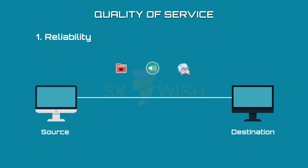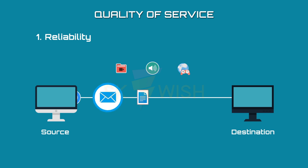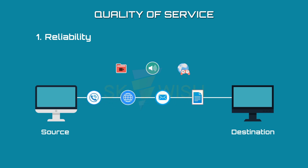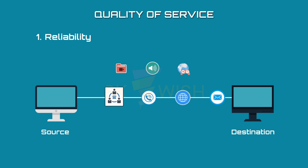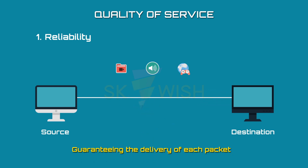Reliability is a characteristic that a packet in the network needs. If we lose a packet or acknowledgement, it needs to be retransmitted. It is more important for file transfer, electronic mail, and internet access to have reliable transmissions than telephony or audio conferencing. Guaranteeing the delivery of each packet is nothing but reliability.